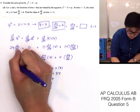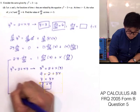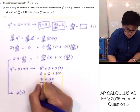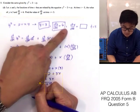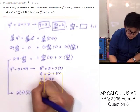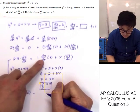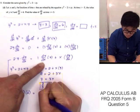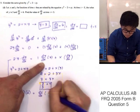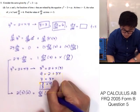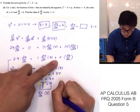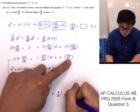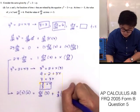Plugging all values into our differentiated equation: 2 times 3 times 6 equals dx/dt times 3, plus 7/3 times 6. The left side gives 36, and on the right we have 3 dx/dt plus 7/3 times 6.